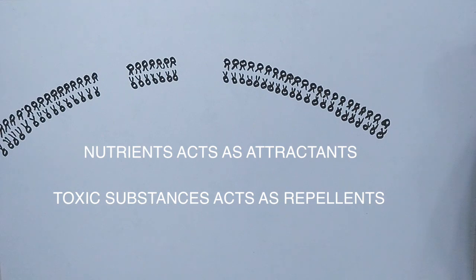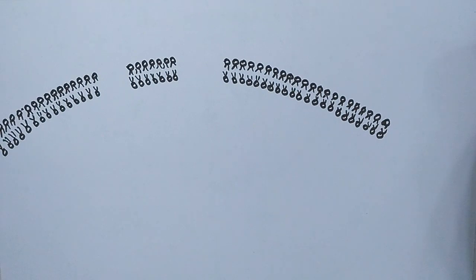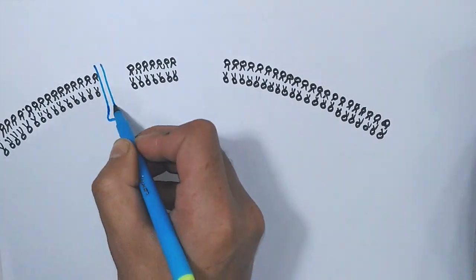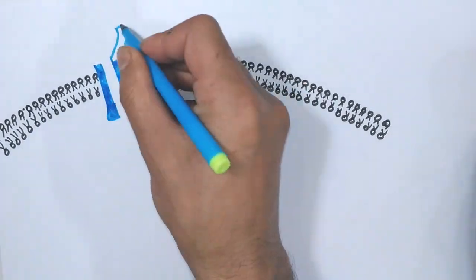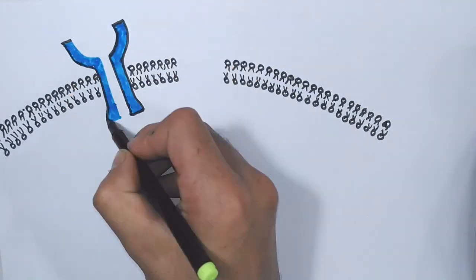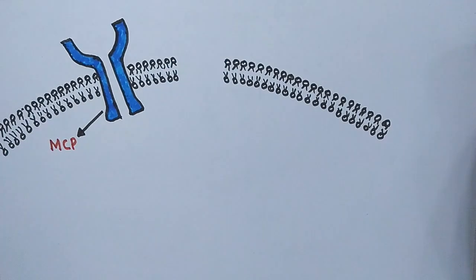But how are these attractants and repellents sensed within the bacteria? This will be shown in the following signaling pathway. The chemotaxis pathway is mediated through a transmembrane protein called MCP, methyl-accepting chemotaxis protein.